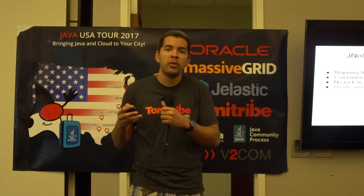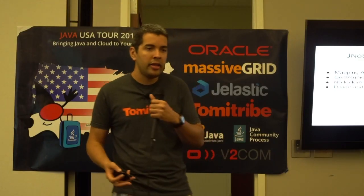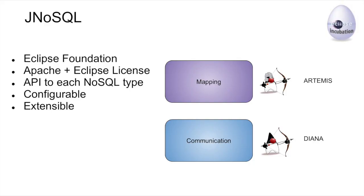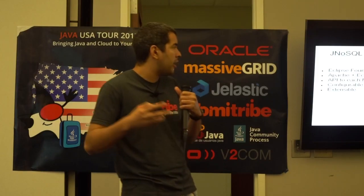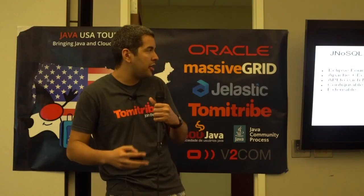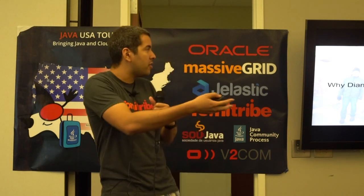What happens with multi-model? If a NoSQL database supports more than one type, it must implement more than one API. So Couchbase supports document and graph, so it must implement both. That's the idea. Right now JNoSQL is an Eclipse Foundation project with a dual license — Apache and Eclipse. The idea is to have a common API for NoSQL, but where the different behavior matters, I have extensions to use that specific behavior. And why the names Diana or Artemis? Basically it's my project, my name — I love history, so I put those names.